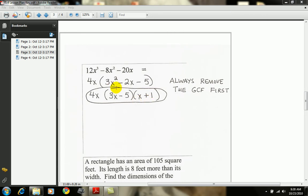Again, trial and error. We needed a 3x squared in the front, so I used a 3x and an x. We needed a negative 5 in the back, so I chose to use a negative 5 and a positive 1.